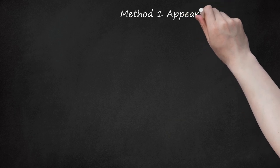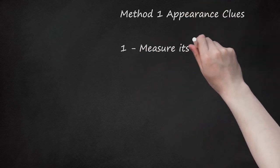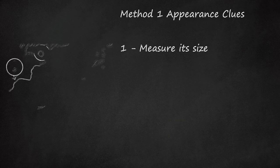Method 1: Appearance Clues. First, measure its size. For most species of frog, males are noticeably smaller than females.